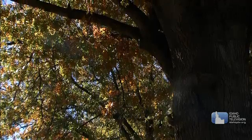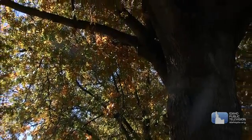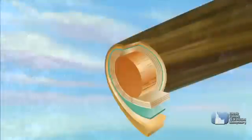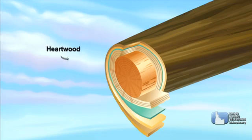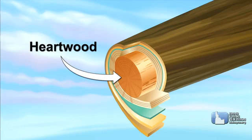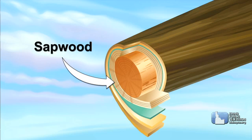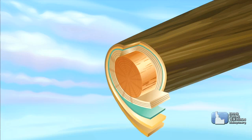The trunk is the tree's support and transport system. The center part of the trunk is called the heartwood — the supporting pillar of the tree, made up of dead cells. The next layer is the sapwood, which contains a system of tubes like straws that transports water and nutrients from the roots through to the leaves and other parts of the tree.